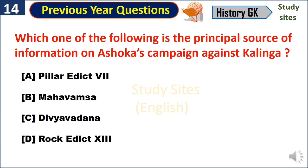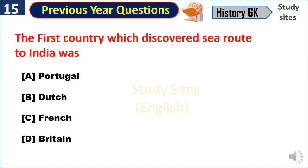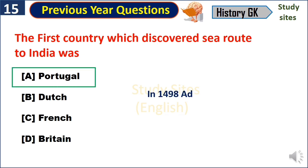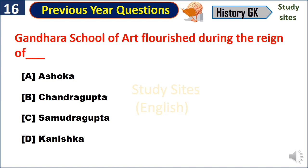Which one of the following is the principal source of information on Ashoka's campaign against Kalinga? The first country which discovered the sea route to India was Portugal in 1498 AD. The Gandhara school of art flourished during the reign of Kanishka.